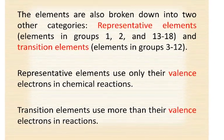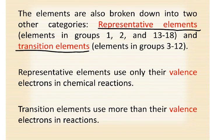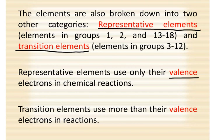The elements are broken down into two other categories: representative elements and transition elements. Representative elements are elements in groups 1, 2, and 13 to 18, and transition elements are in groups 3 through 12. Representative elements use only their valence electrons in chemical reactions, while transition elements use more than their valence electrons — they go into the D subshell.